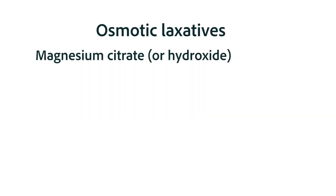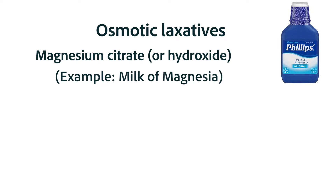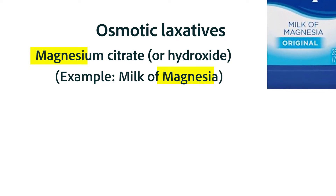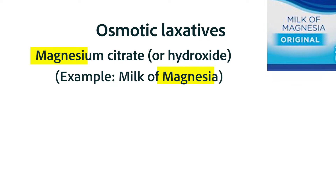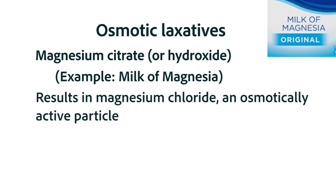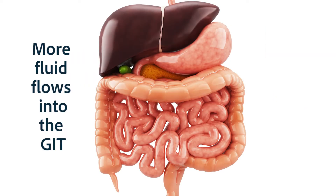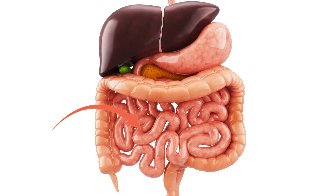With respect to the magnesium citrate or magnesium hydroxide laxatives, you'll remember that those were included in our discussions about antacids. Milk of magnesia is magnesium citrate. In the stomach, the magnesium citrate and the hydrochloric acid are involved in a chemical action that neutralizes the acid and makes magnesium chloride. That molecule is osmotically active and you can basically think of that as pulling water into the intestines.